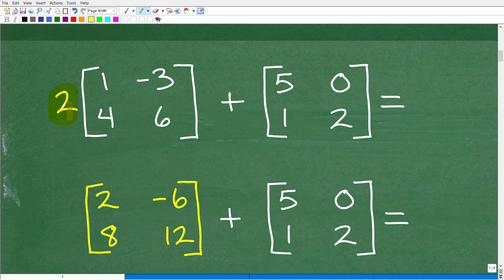But the first thing is we need to recognize what this 2 is. Well, this scenario, this 2 times this matrix, this is something called scalar multiplication.